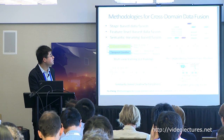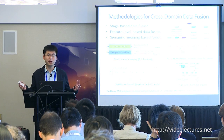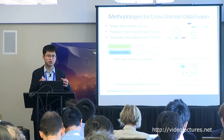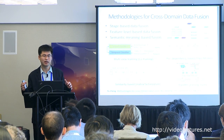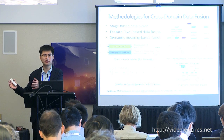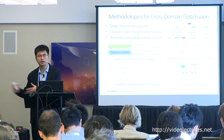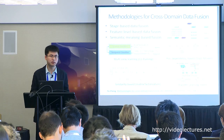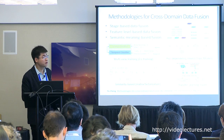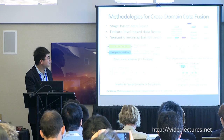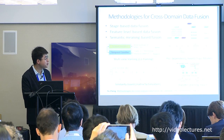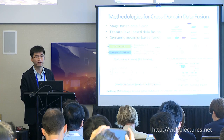The second type is feature-based data fusion: in the real estate ranking problem, we combined features extracted from different data types with constraints such as pairwise ranking and sparsity regularization. The third type is semantic meaning-based fusion, which is further comprised of four methods.